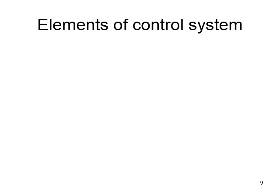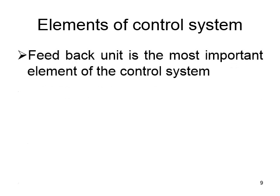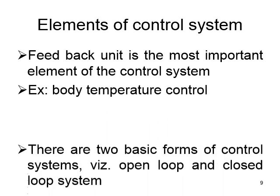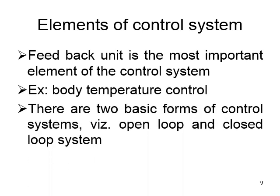The most important element in a control system is called feedback. A control system consists of two types: the first is called an open loop system and the second is called a closed loop system.